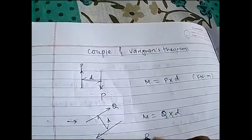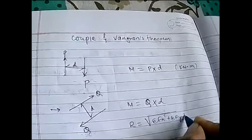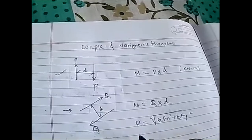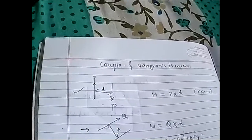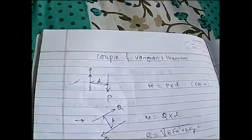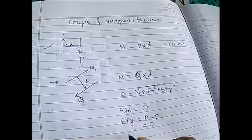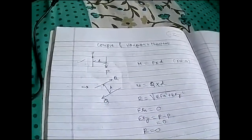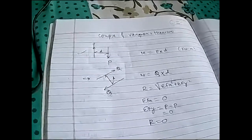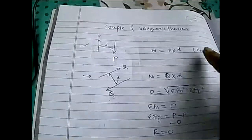The resultant of a couple is zero. The resultant formula is square root of (ΣFx² + ΣFy²). Referring to the diagram where one force is going up, ΣFx will be zero because all forces are vertical. Then ΣFy equals +p minus p, which comes out to be zero. So ultimately the resultant is zero. We must remember: the forces are equal in magnitude, parallel to each other, opposite in direction, and the resultant is zero.